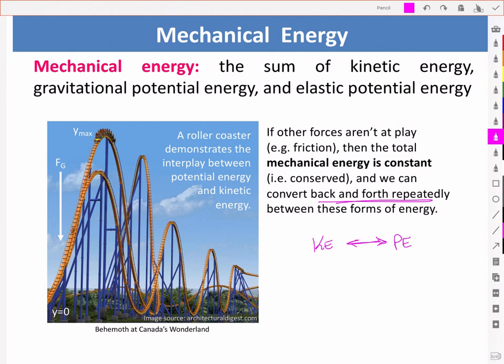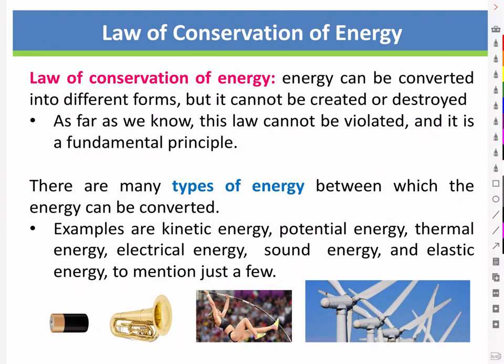A roller coaster demonstrates the interplay between potential energy and kinetic energy. We go from a position of high potential energy to high kinetic energy, back to high potential energy, back to high kinetic energy — going back and forth between those two forms. This forms part of a fundamental law, the law of conservation of energy, which as far as we know cannot be violated. Keep in mind there are many types of energy between which energy can be converted: kinetic to potential, to thermal energy, electrical energy, and so on.